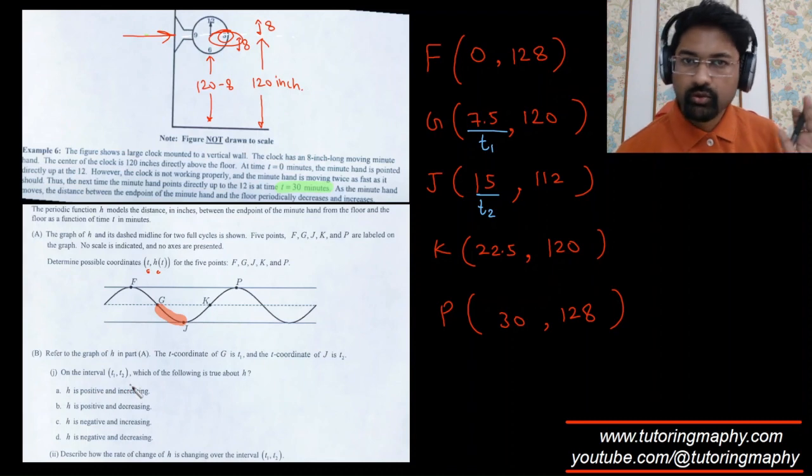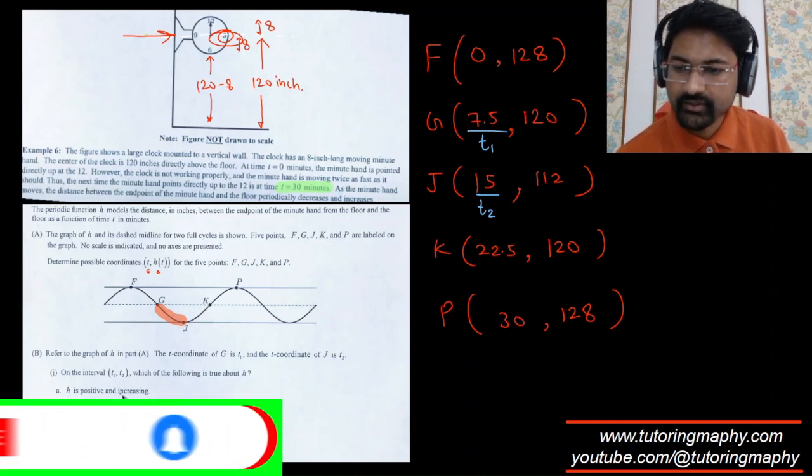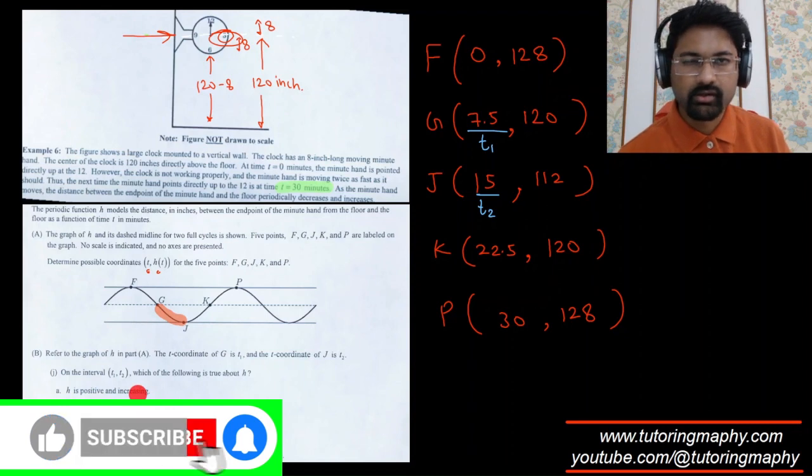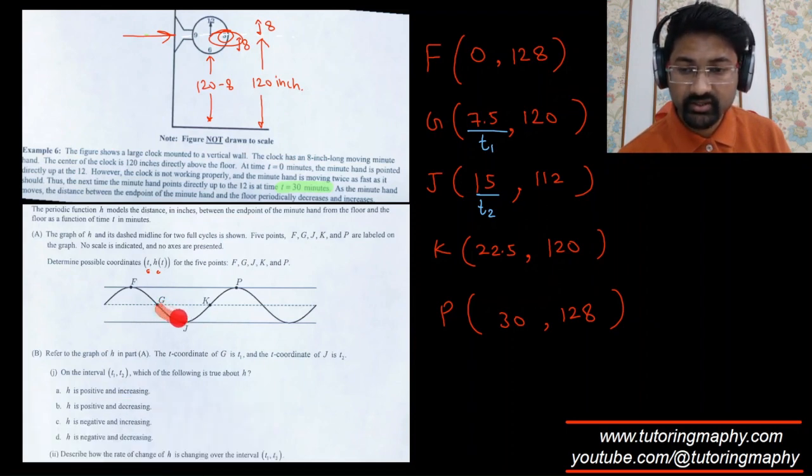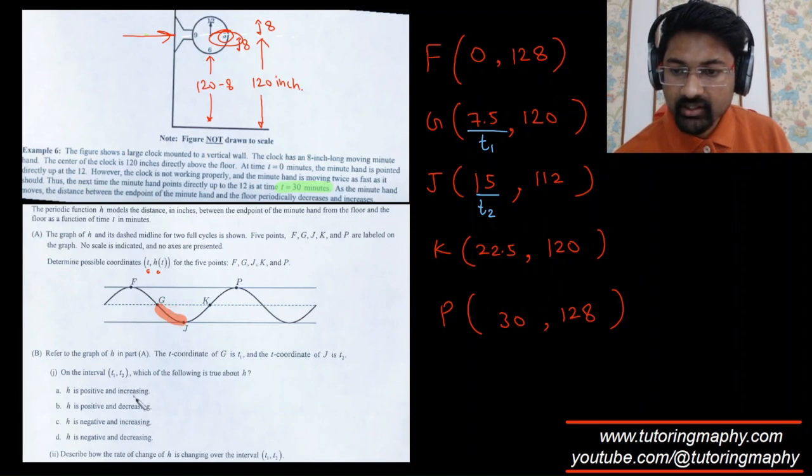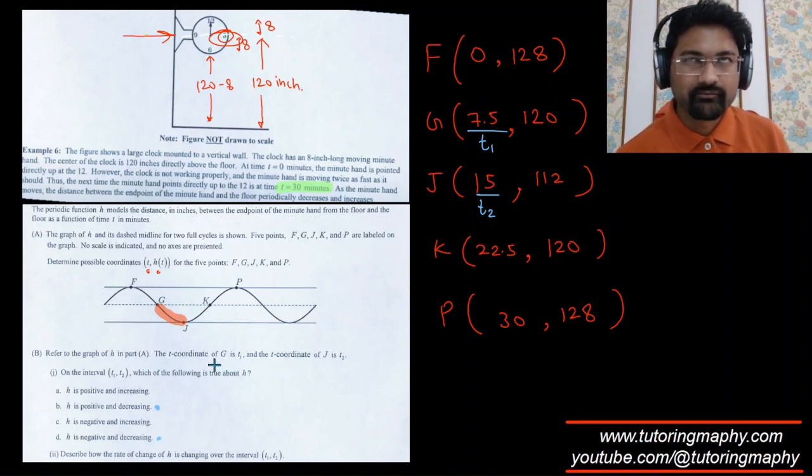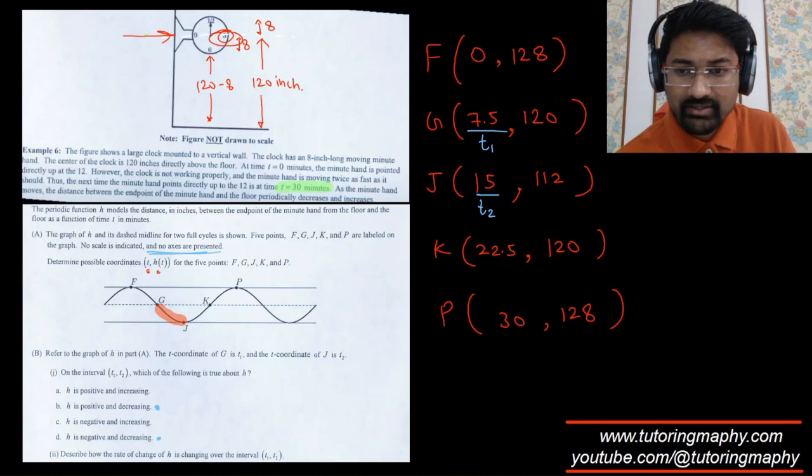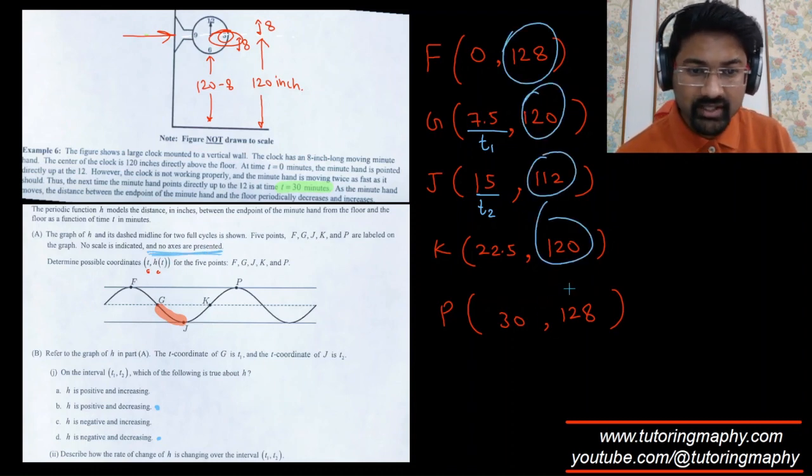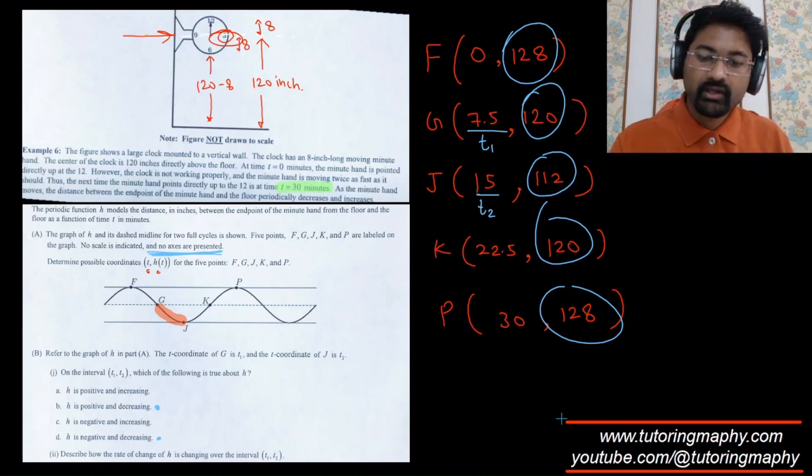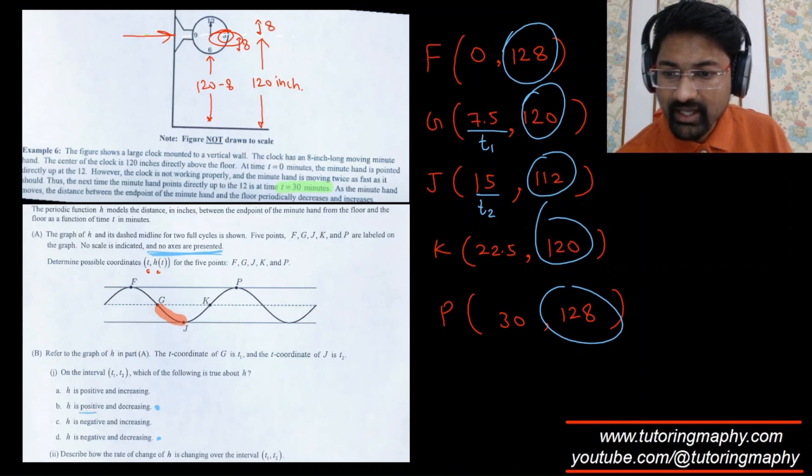H is positive and increasing? It's not increasing for sure because we can clearly see that it is decreasing in nature. Now the question is whether h is positive or negative. Although for a second I thought that h is negative because I was thinking of this to be the x-axis, but remember there are no axes given and you can clearly see that the height is never going negative. It's always positive. So it has to be positive and decreasing in nature. Option B makes absolute sense.